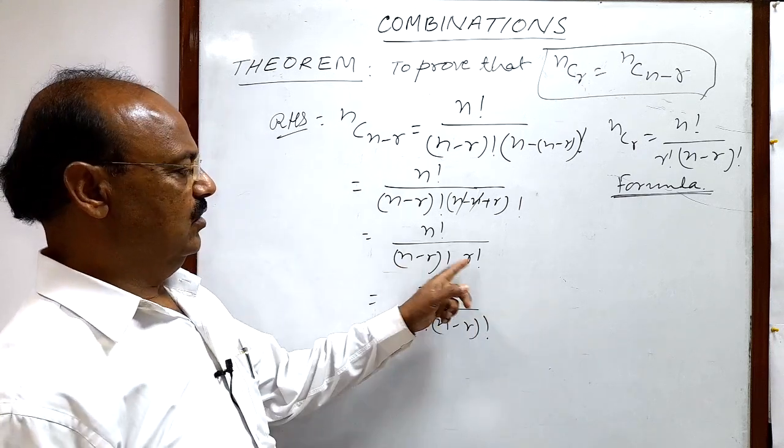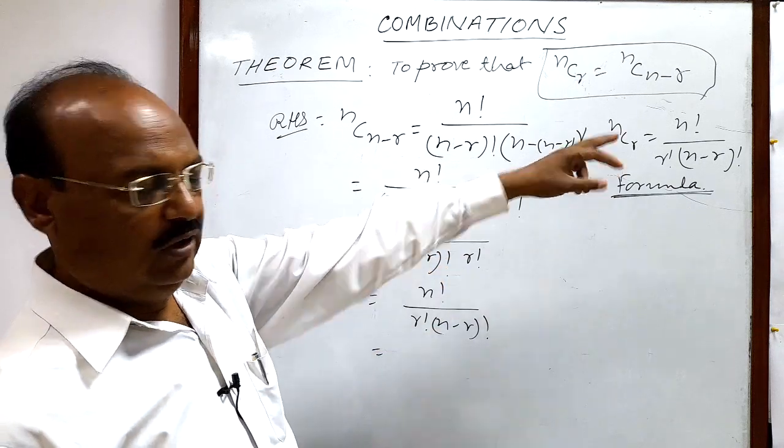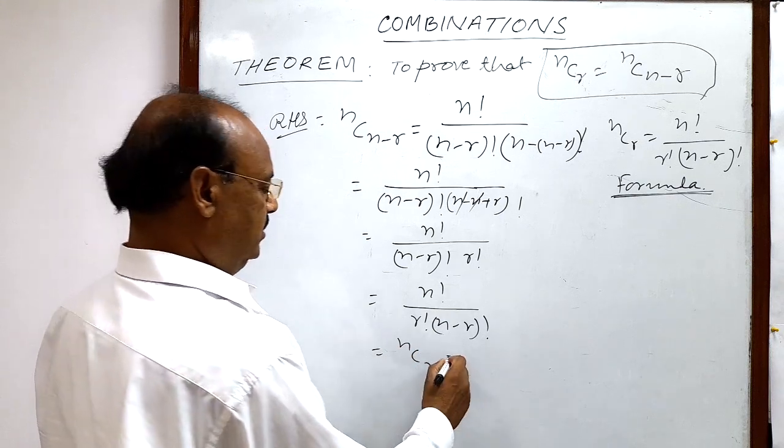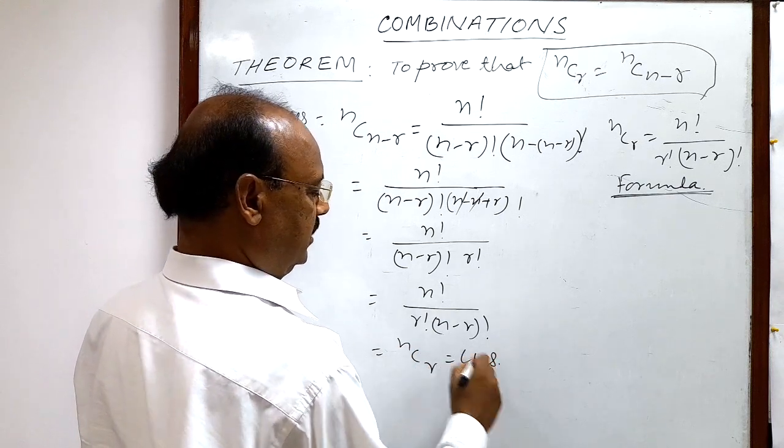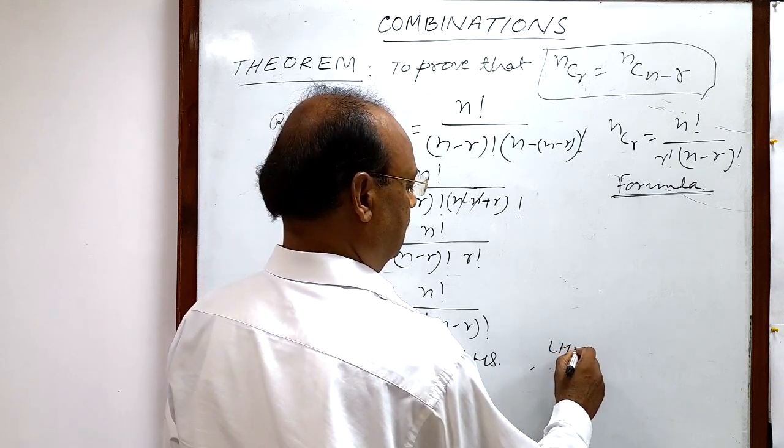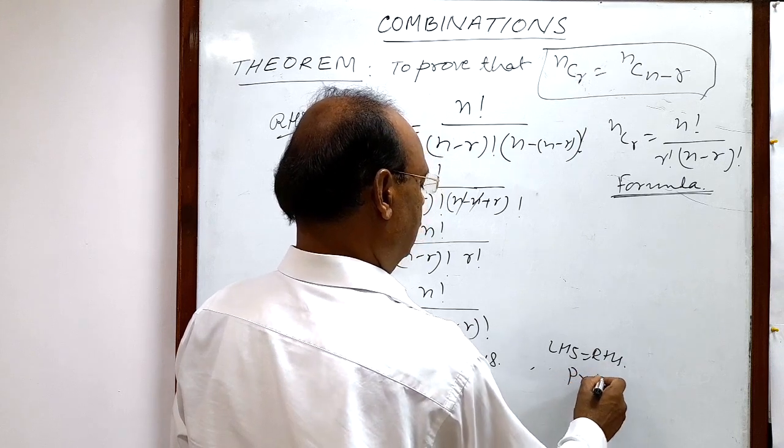Just we have changed the order of these two factorials, and this is by that formula also nothing but nCr, and this is LHS. So we are getting LHS is equal to RHS. So it has been proved.